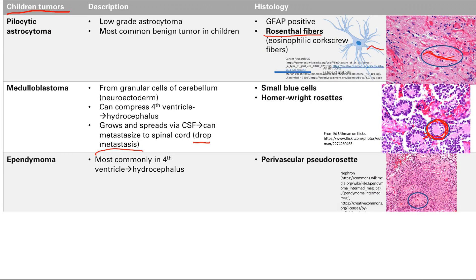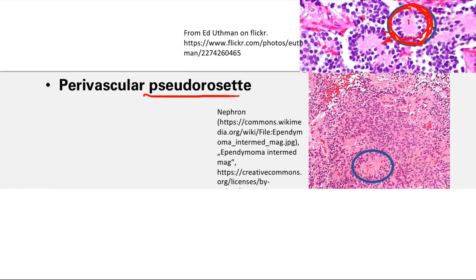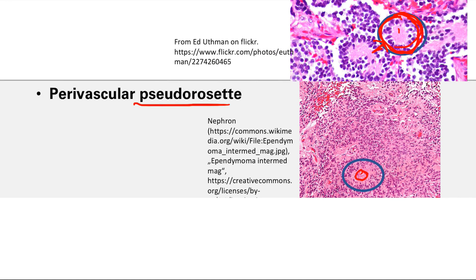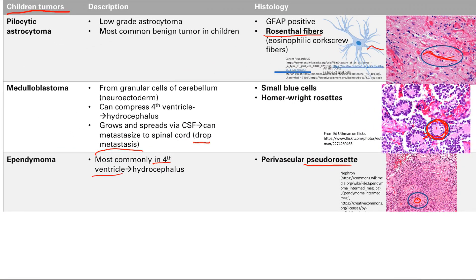The next one is the ependymoma. Ependymal cells line the ventricles and the central canal of the spinal cord. These are most commonly found in the fourth ventricle, and when they block up the ventricle, they can cause hydrocephalus. On histology, this one shows pseudorosettes. The difference: a rosette surrounds an empty lumen, while a pseudorosette has tumor cells surrounding a blood vessel. Ependymomas line the ventricles, and when they become tumors, they end up surrounding blood vessels — so they form pseudorosettes.